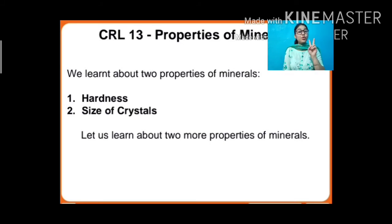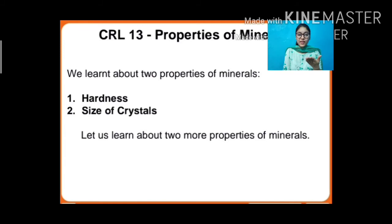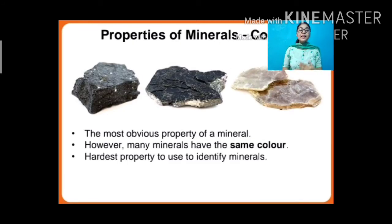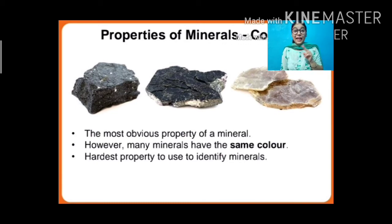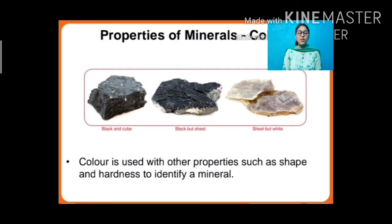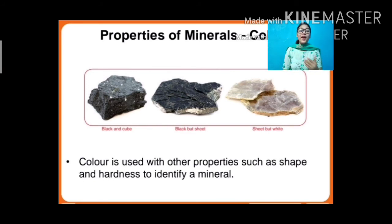So we have now learnt about two properties of minerals: the first is hardness and the second is crystal shape. Now let us learn about two more properties. The third property is colour — the most obvious property of a mineral. However, many minerals have the same colour, making it the hardest property to use to identify minerals. Colour is therefore used together with other properties such as shape and hardness to identify a mineral.